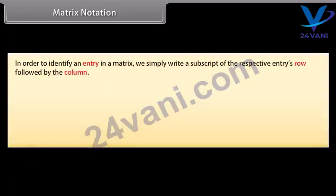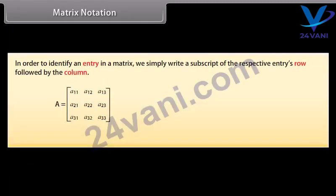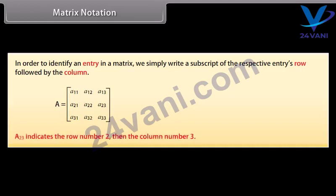Matrix notation. In order to identify an entry in a matrix, we simply write a subscript of the respective entry's row followed by the column. In matrix A, we write A₂₃ to denote the entry in the second row and the third column. A₂₃ indicates row number 2 and column number 3.